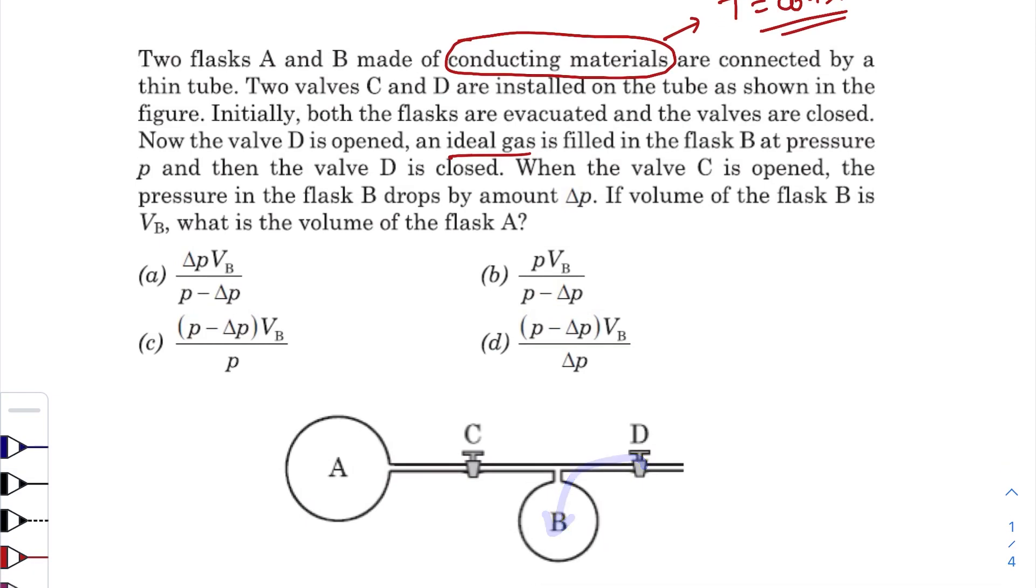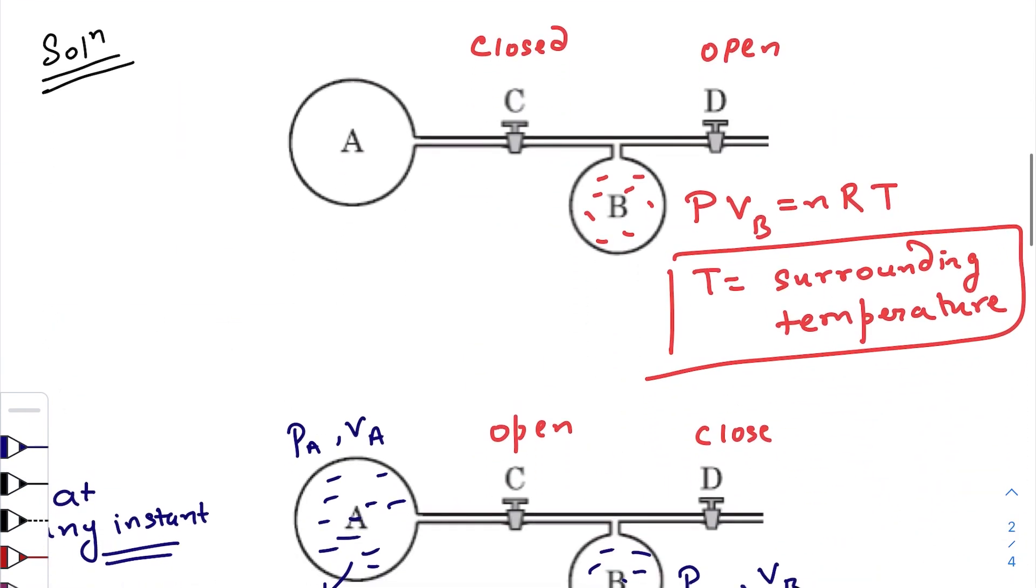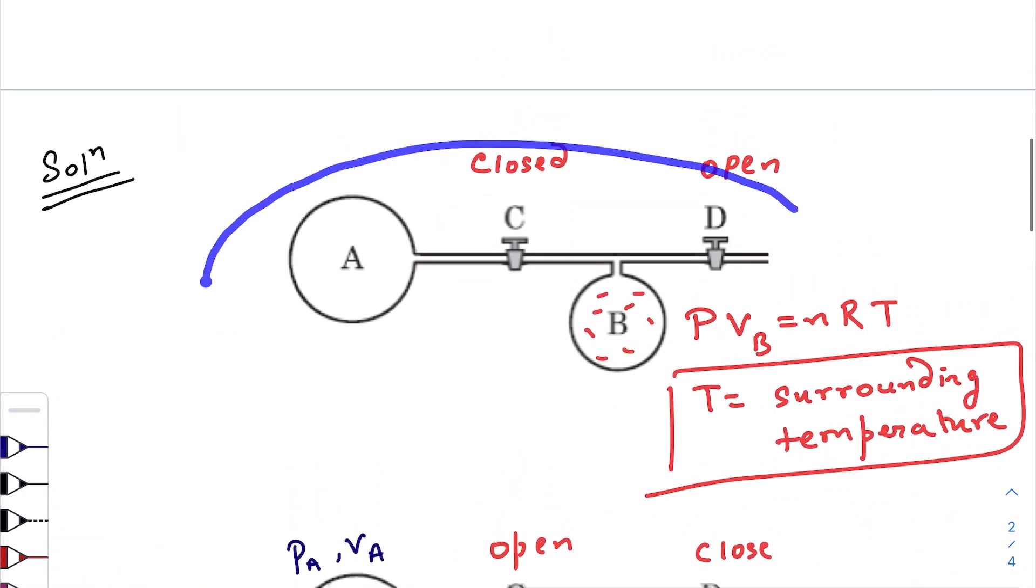Another thing: after transferring the gas in flask B, this knob is closed, so the total number of moles will remain constant. So n will also remain constant, because the gas that is present in B will only be distributed to A. So let us go to the solution. The solution is pretty small.